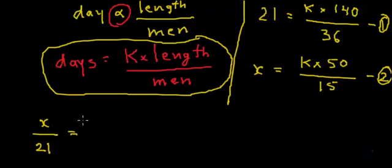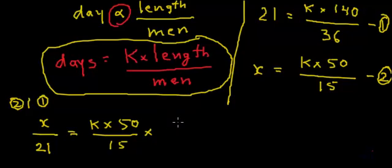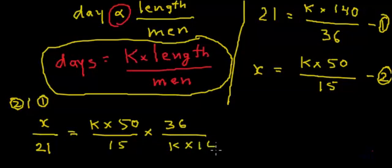This will be equal to the right-hand side of equation 2 divided by the right-hand side of equation 1. So the right-hand side becomes: k multiplied by 50 divided by 15, multiplied by the inverse of equation 1's right-hand side, which gives us 36 divided by k multiplied by 140.